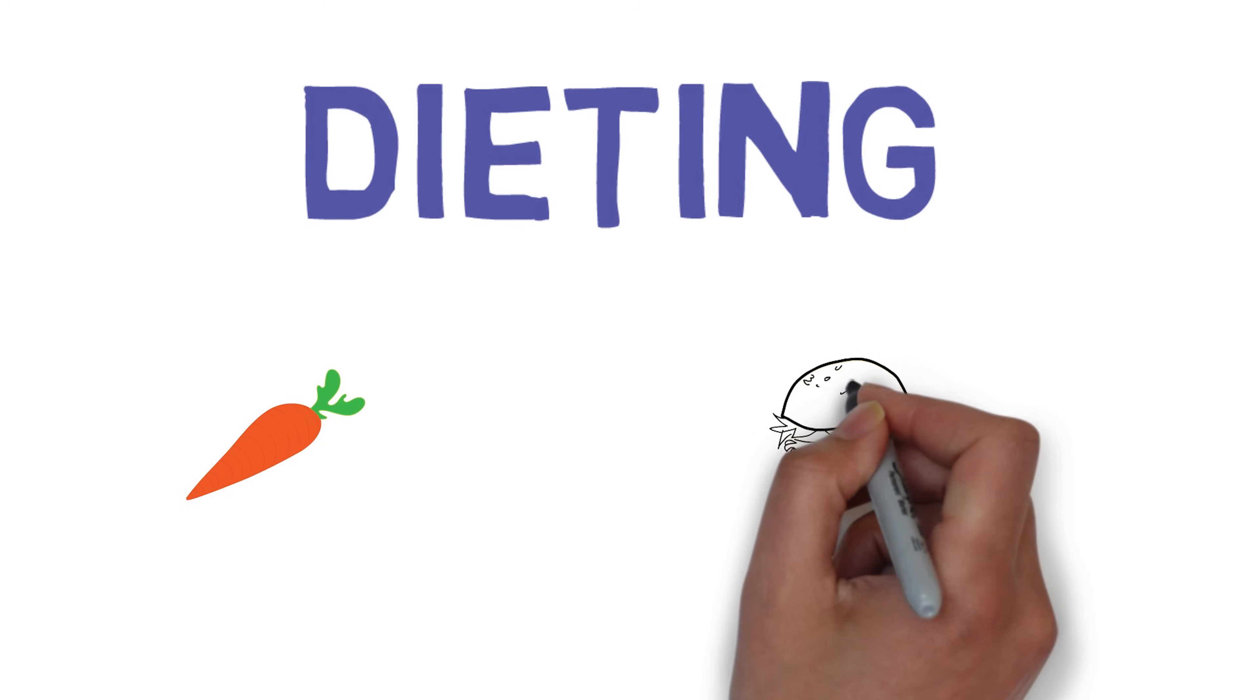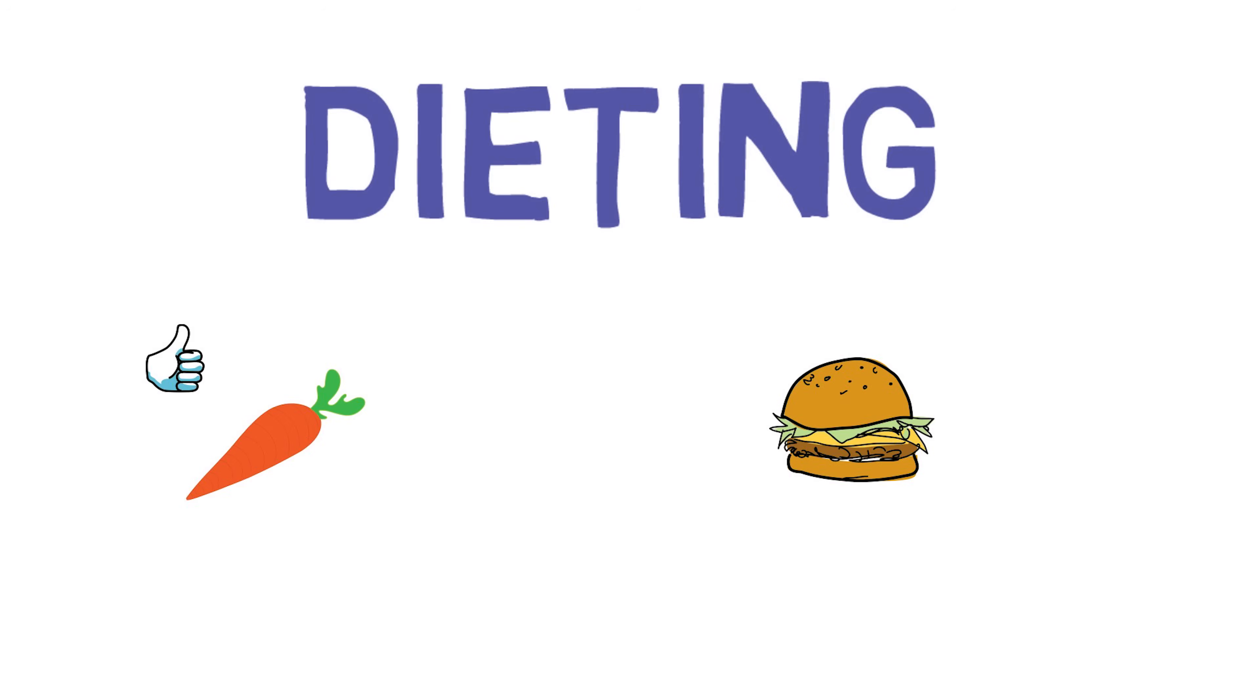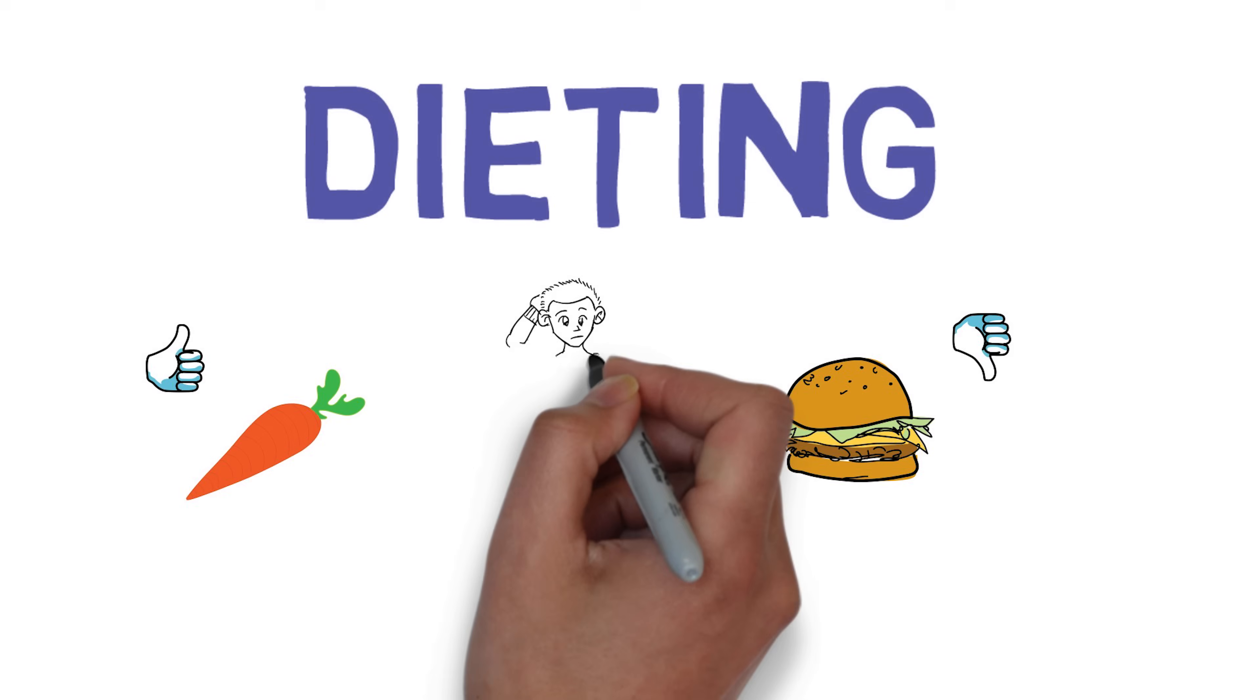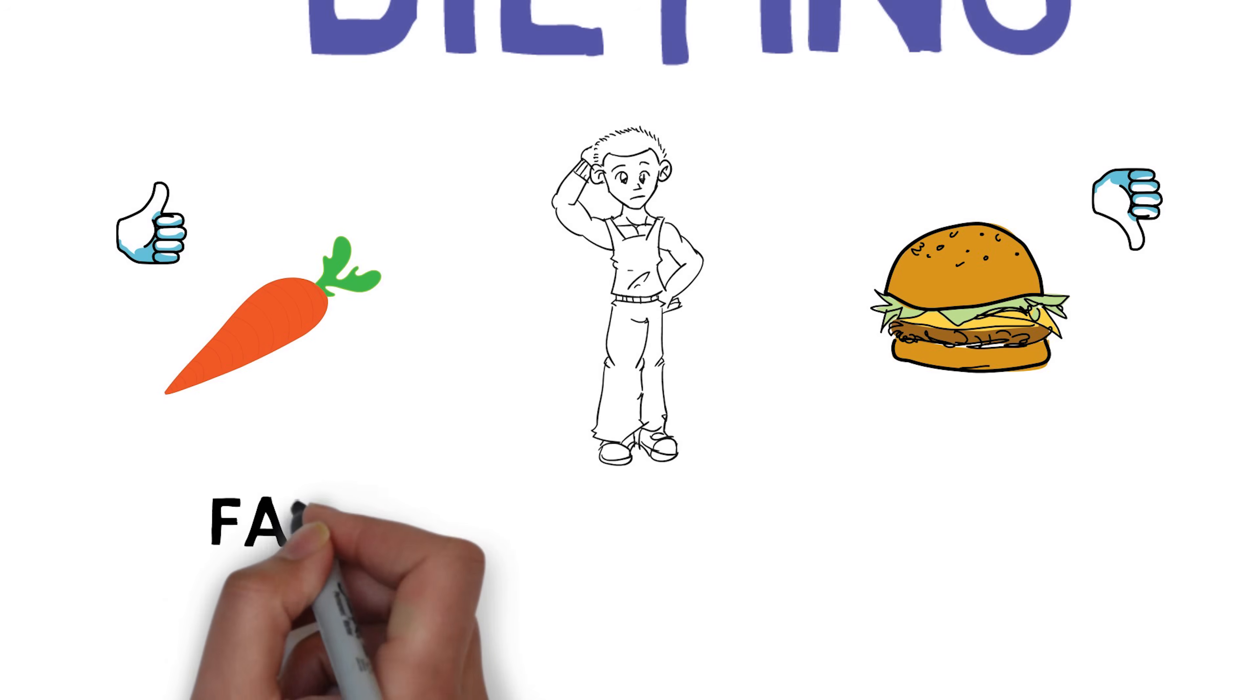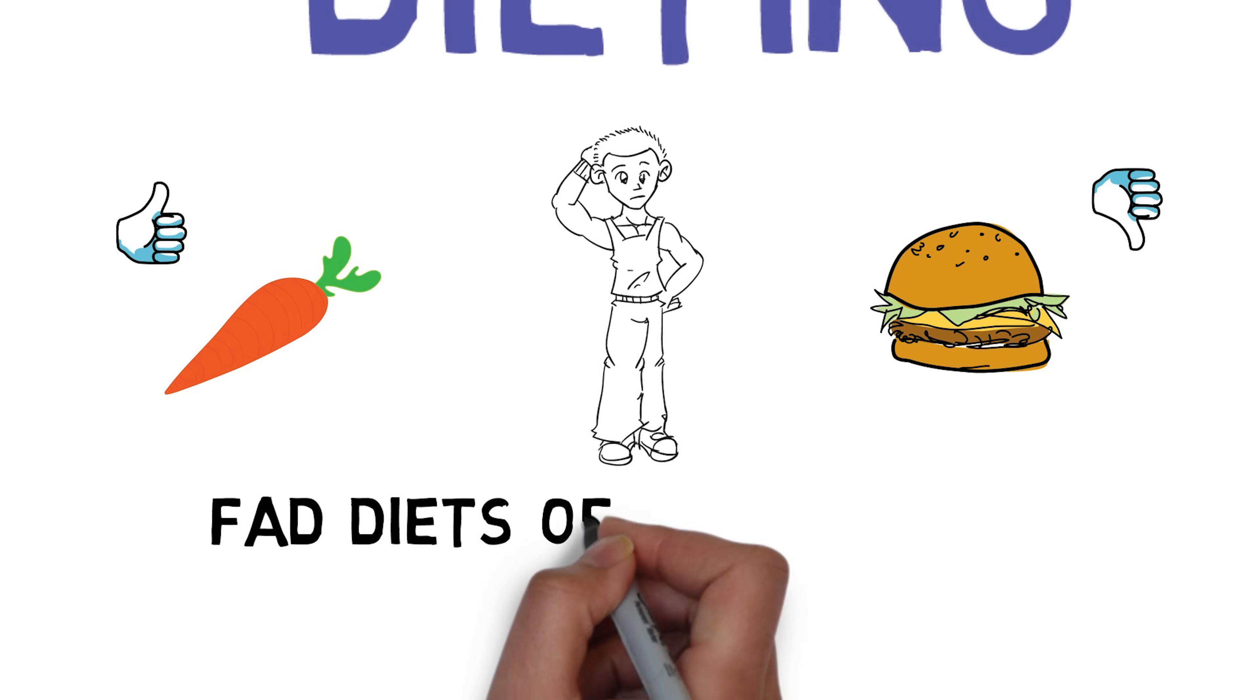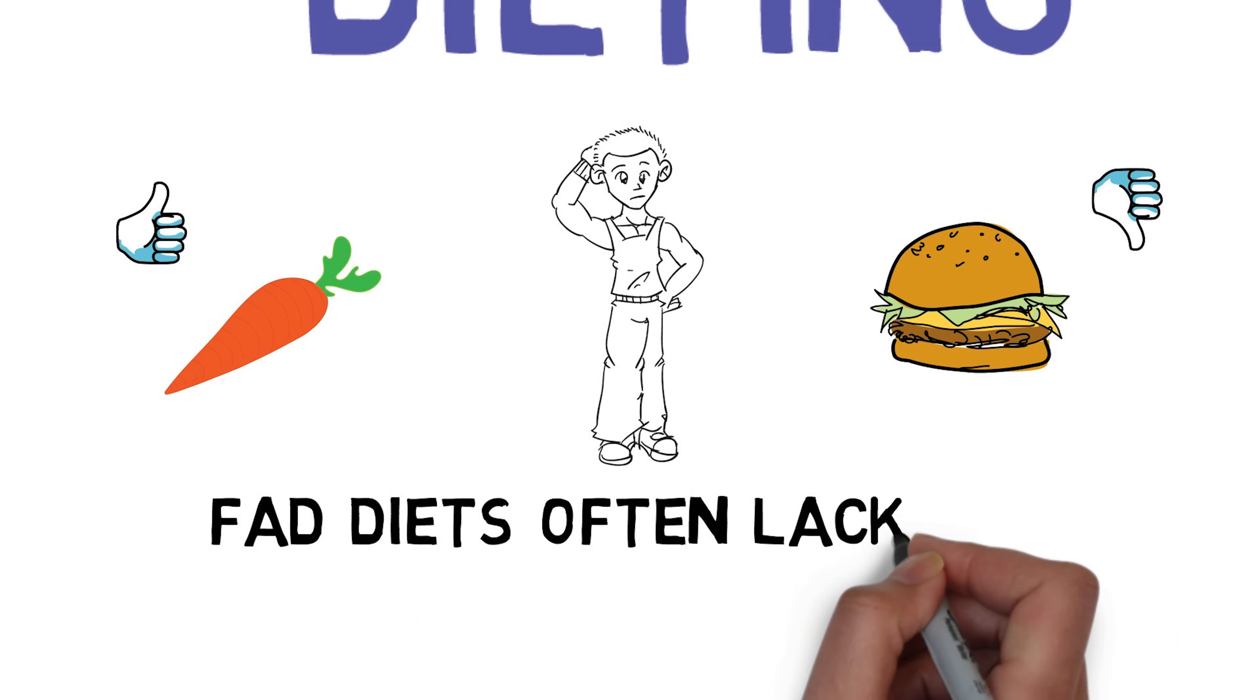For some, it can be as simple as avoiding foods which they define as junk foods. For others, they may choose specific food items to cut out. The problem with diets like this is they are imprecise and based more on conjecture than on science and reason.